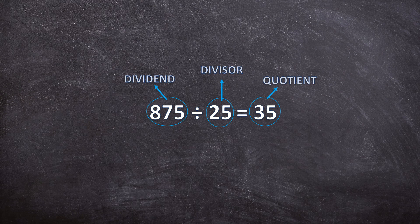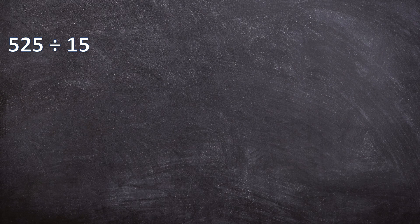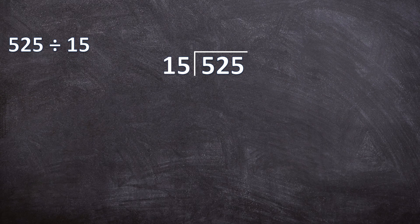So now let's move on to our first example: 525 divided by 15. Before we can do this long division, we need to write it in the correct format. We need our long division bracket — our dividend goes underneath the bracket and our divisor goes in front of the bracket. Our answer, the quotient, will go on top of the bracket. We will complete this long division with four steps, repeating them over and over again until our long division is done.